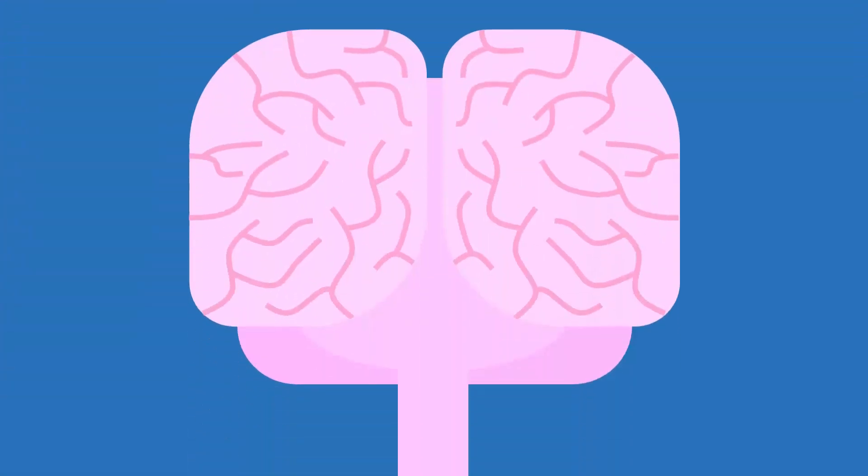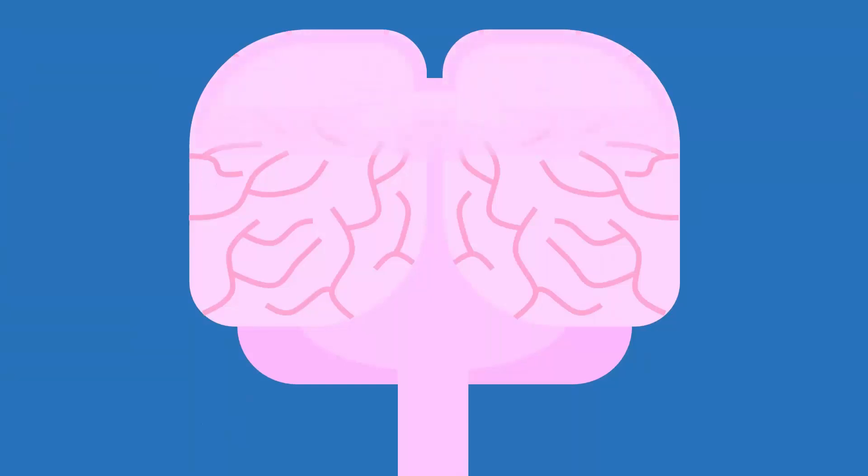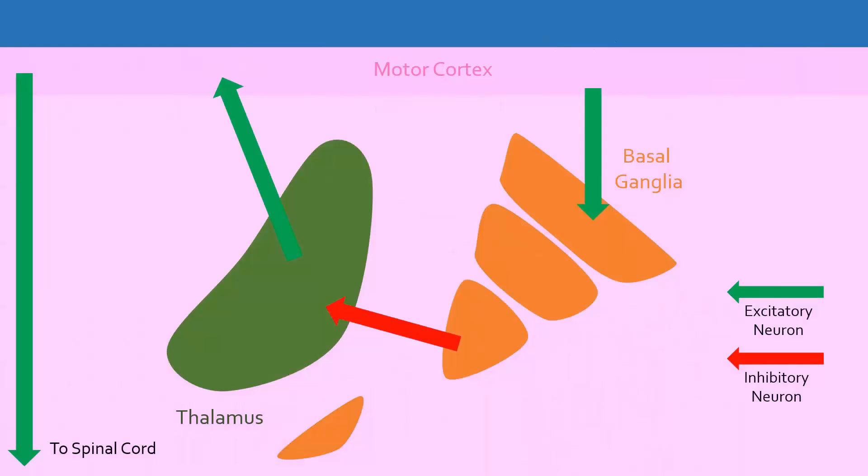Three important areas of the brain are involved in voluntary movement: the motor cortex, the basal ganglia, and the thalamus. These three areas are connected by inhibitory and excitatory neurons, which are shown as red or green arrows. Each arrow represents many similar neurons grouped together.